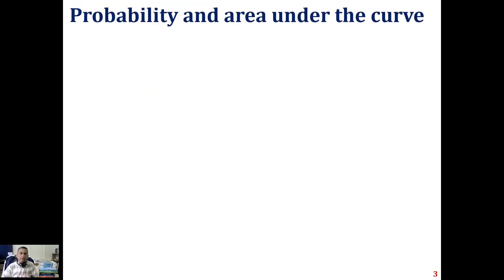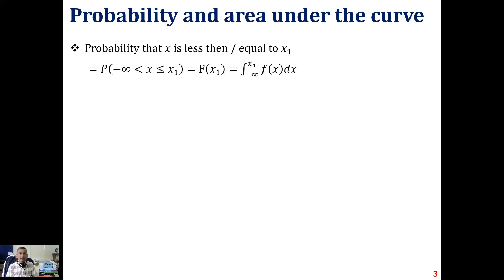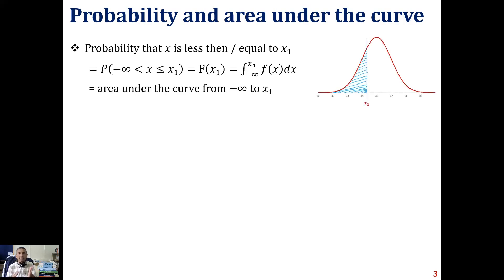In real life, the normal distribution is applied very often to estimate the probability that a variable will take values within some portion of its range. For example, the probability that x is less than or equal to some value x1 can be written as P(minus infinity < x ≤ x1), which equals capital F of x1, the cumulative distribution function. This is represented by the area under the curve from minus infinity to x1, as shown in this figure.